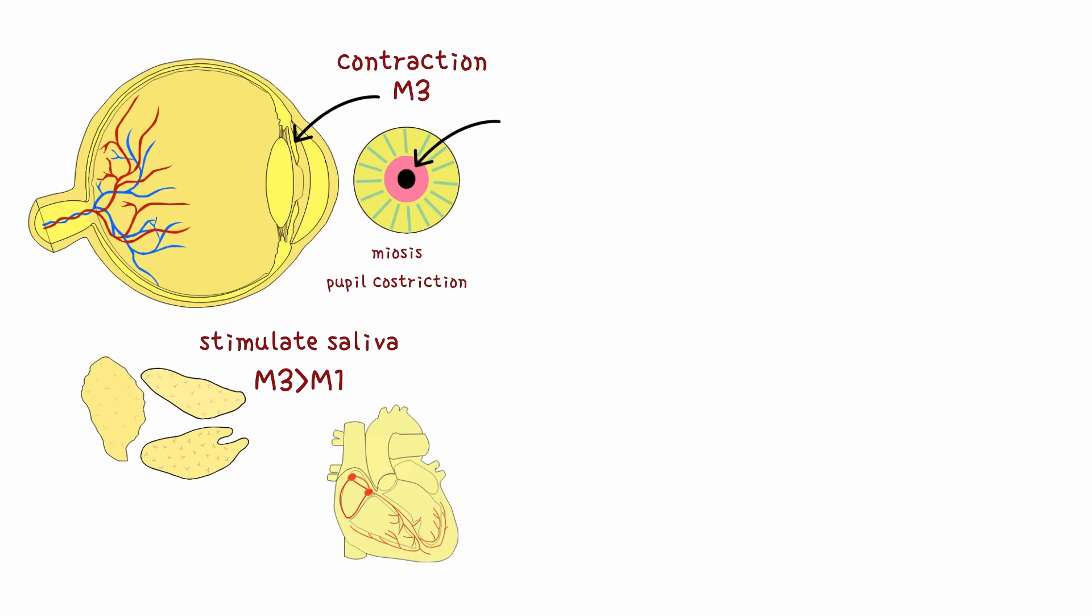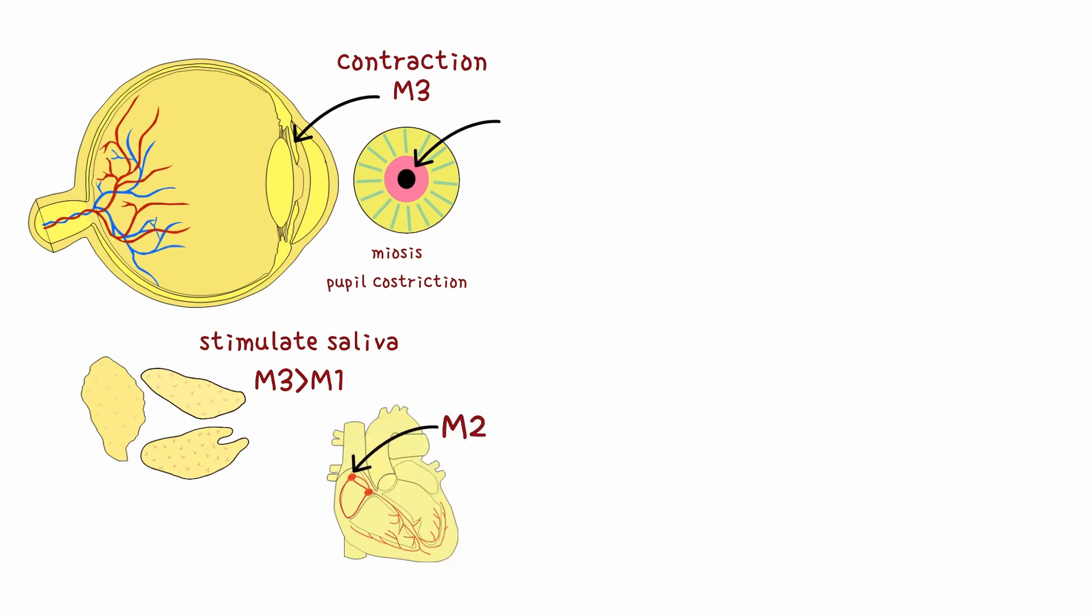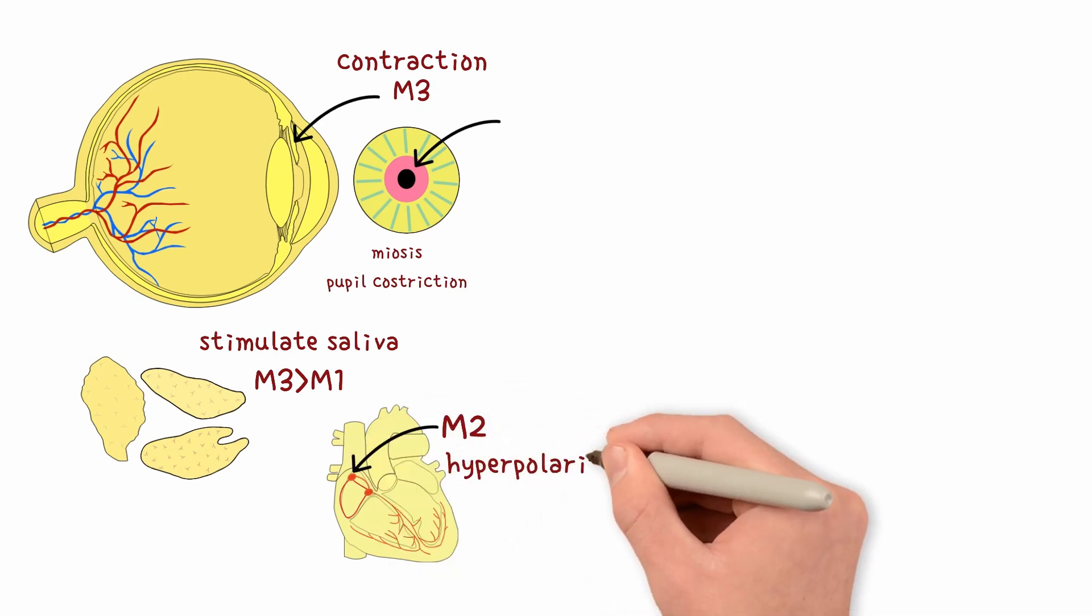The heart. Jack is relaxing. M2 receptors slow down the heart. M2 is so linked with the heart that it is often called the cardiac M2. By opening potassium channels, it hyperpolarizes the nodal cells. This slows the heart rate and slows conduction velocity.